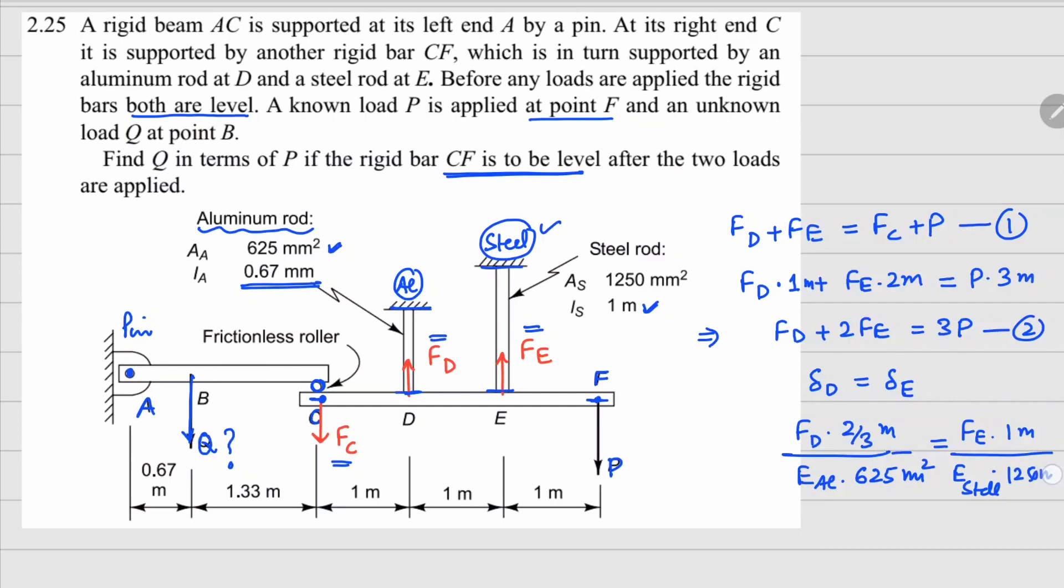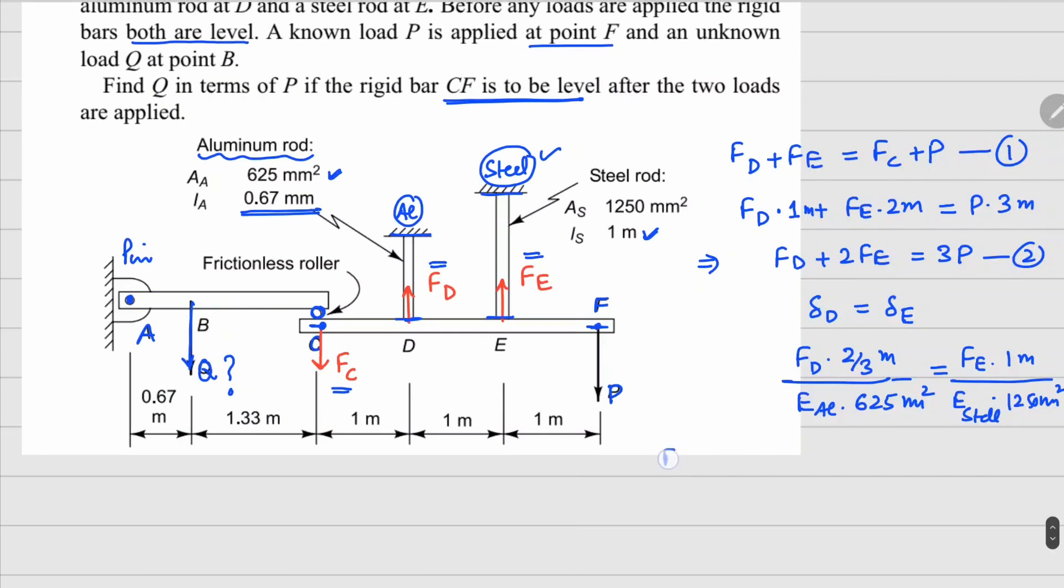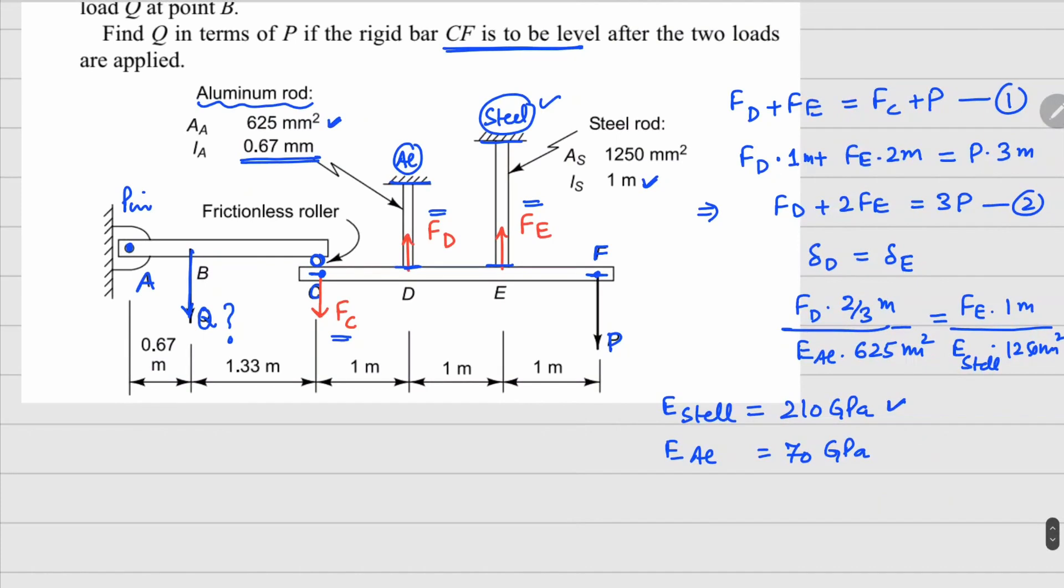So now here if I take your E steel value to be 210 GPa and your E for aluminum as 70 GPa, and in all the other problems I am taking 205, but since there is a ratio required, that's why I'm just taking exactly three times aluminum for the steel. So if I use these values and simplify this relationship, you can write down your FE in terms of FD as 4 over 3 FD.